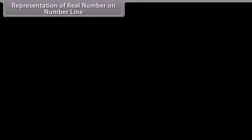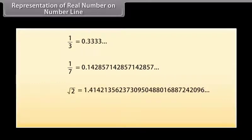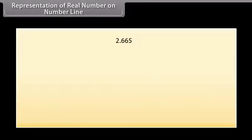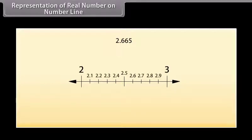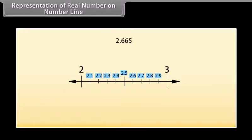Representation of real numbers on number line. We now know that every real number has a decimal expansion. That decimal expansion helps us to locate it on a number line. Let us locate 2.665 on a number line. We know that it lies somewhere between 2 and 3. Imagine dividing it into ten equal parts. For a clear view, the first part represents 2.1, the second 2.2, and so on. Here, 2.665 lies between 2.6 and 2.7.